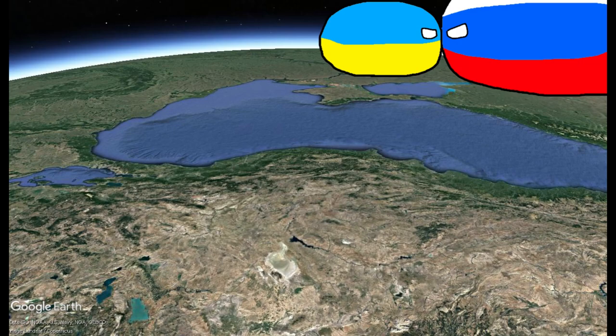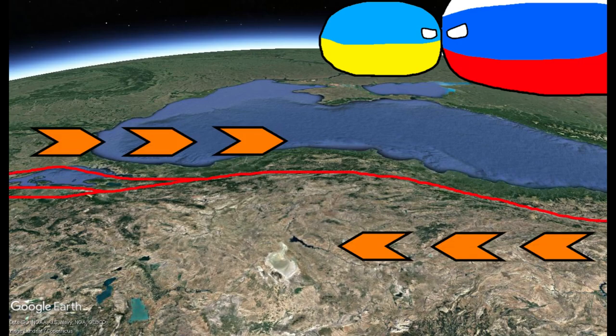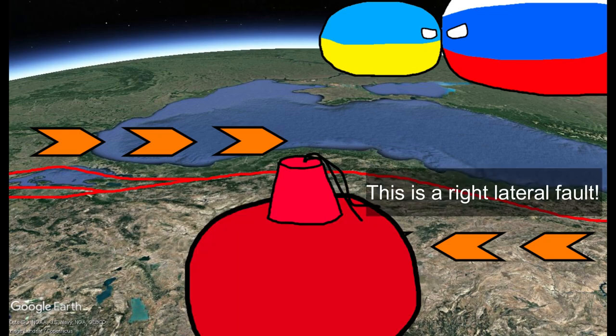If you're wondering what left lateral and right lateral mean, it basically just means in which direction is the rock across the fault from you moving.